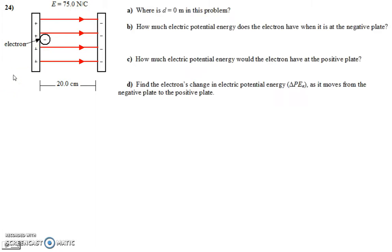Let's start answering some questions. We just finished talking about electric potential energy, and we know that it is measured relative to where the object wants to be. So where is d equals zero in this problem? Where does this electron want to be? It wants to be at the positive plate, so d equals zero at the positive plate. That's where it would have the lowest potential energy — it's like an object resting on the ground, exactly where it wants to be.